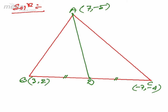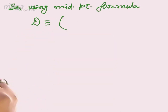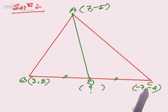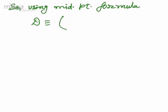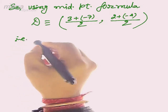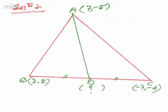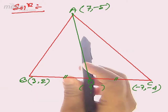We need to find the equation of AD. With the help of the figure, if we get the coordinate of D, we can find the equation of AD. Using the midpoint formula, D is the midpoint of BC: x = (3 + (-7))/2, y = (2 + (-4))/2, so the coordinate of D is (-2, -1).